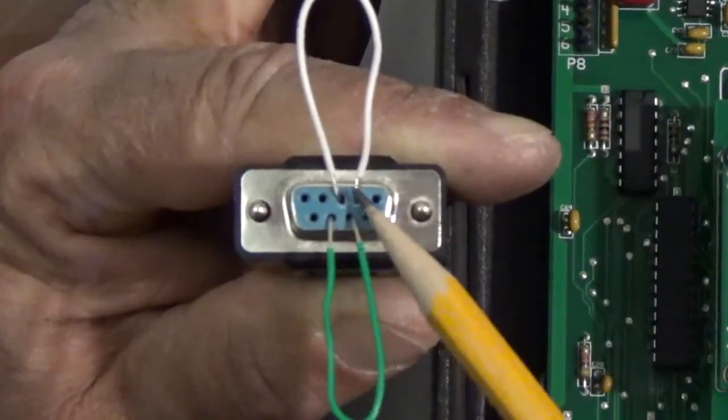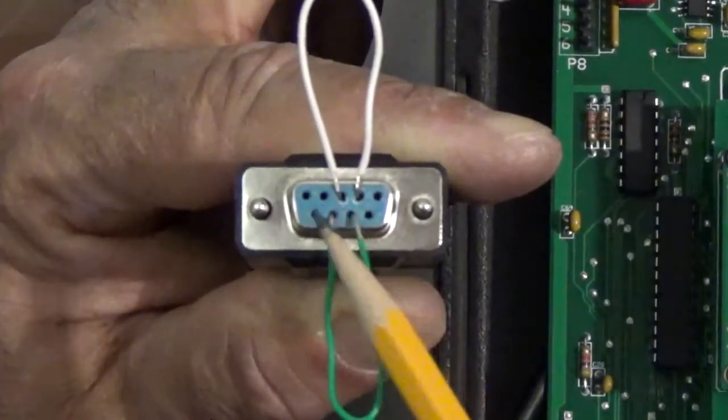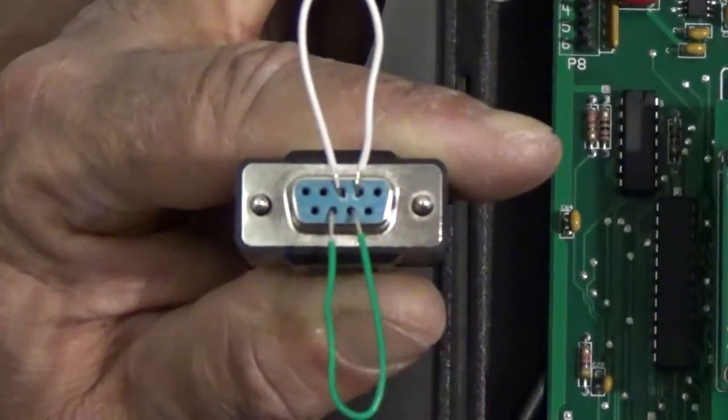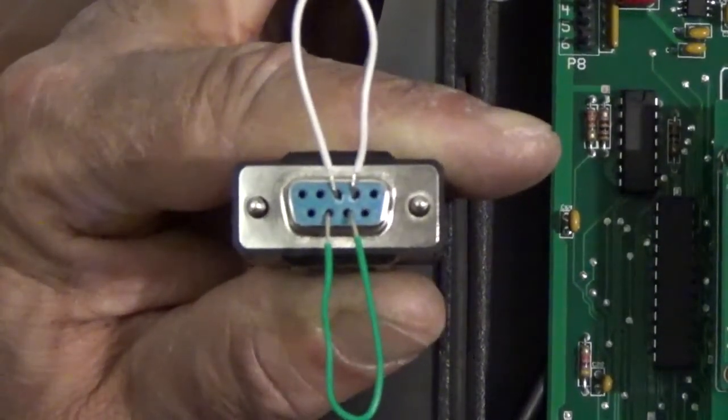So we want to add a jumper to pinholes number two and three. Now the bottom row, the center two holes there is seven and eight, and that's where we want to add our second jumper before our RS232 test on your serial cable.